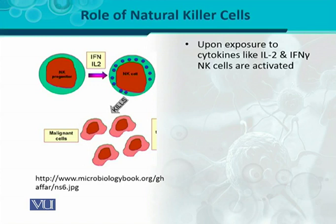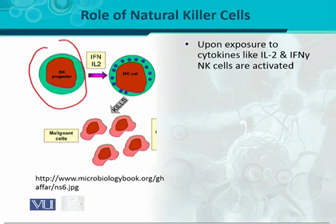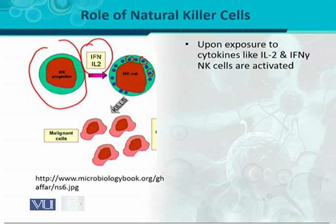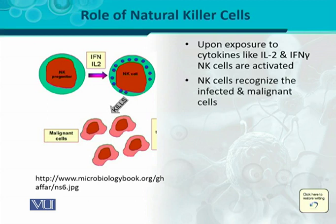Whenever the progenitor NK cells are present, there are no granules in their cytoplasm. But afterward, under the action of these cytokines, granules develop. These granules in the cytoplasm indicate that the NK cells are now mature. They are fully active and have the ability to kill malignant cells. Activated natural killer cells then recognize infected and malignant cells.